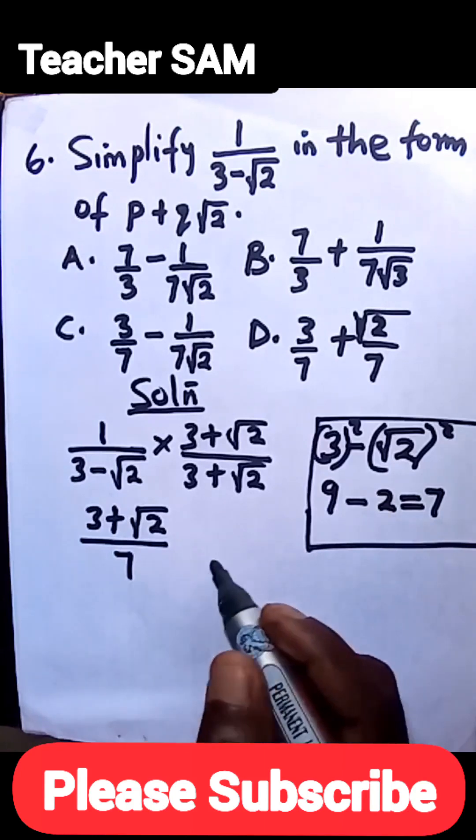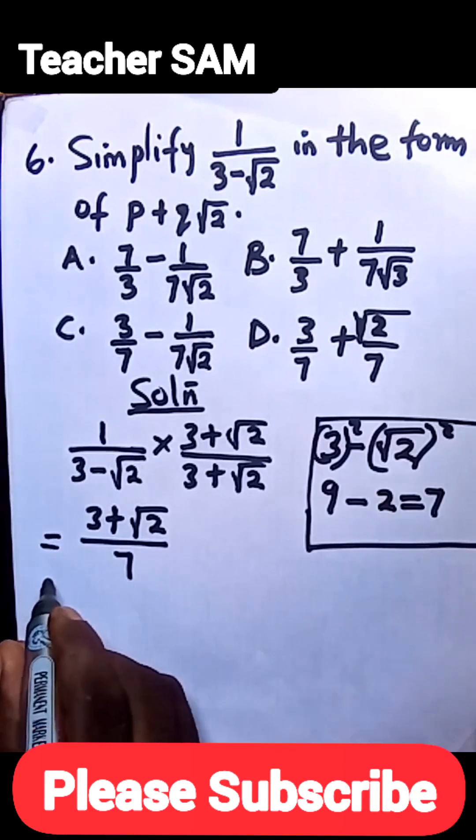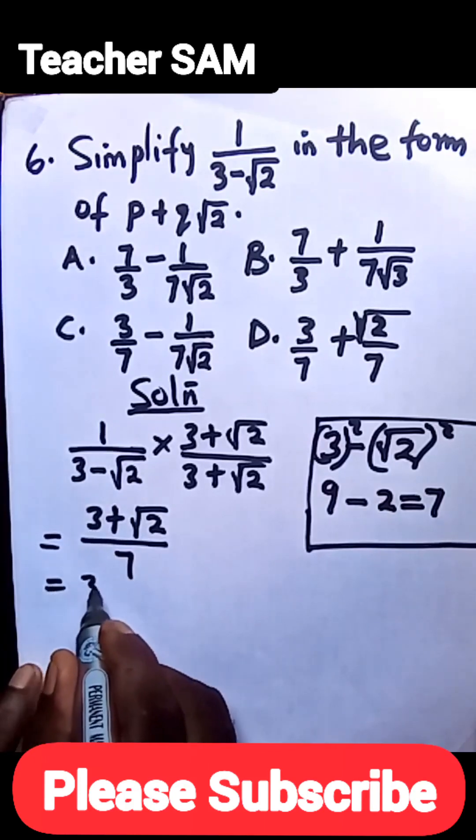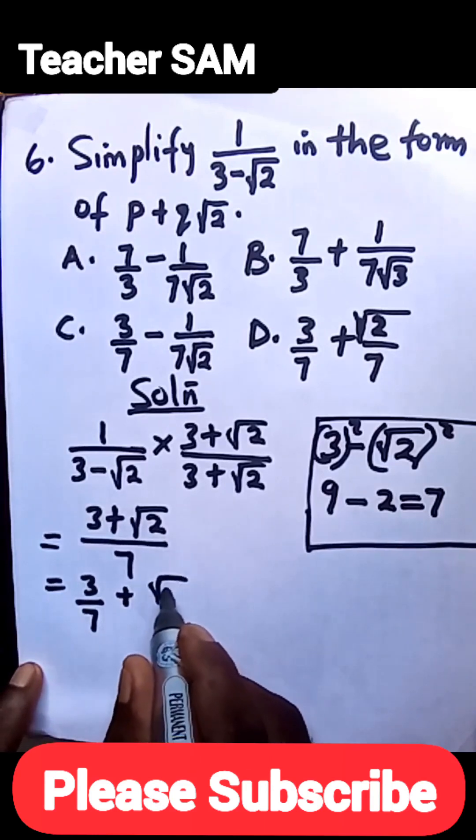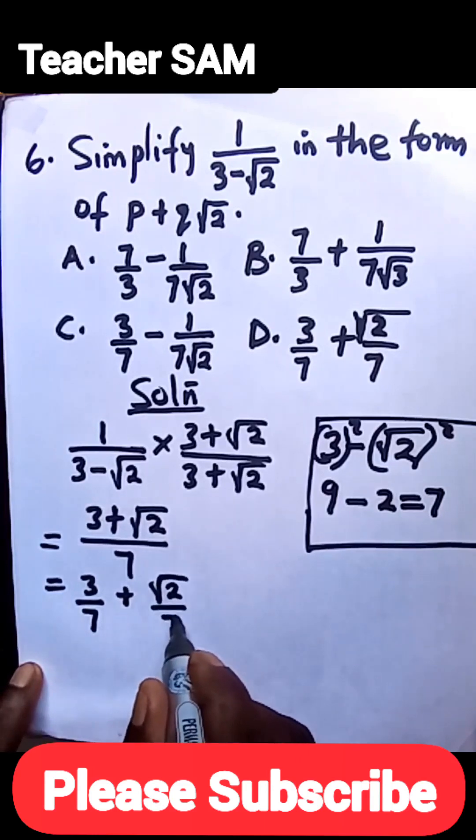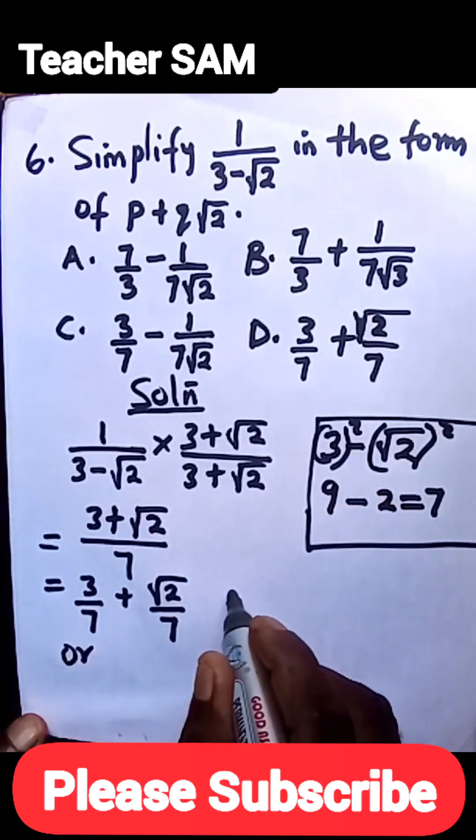So let's move on. I'm going to separate this: 3/7 + √2/7. And this already has answered our question. This is actually our answer, which is D. We are asked to leave it in this form.